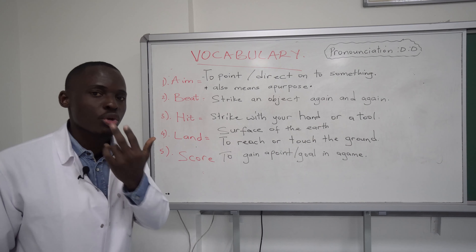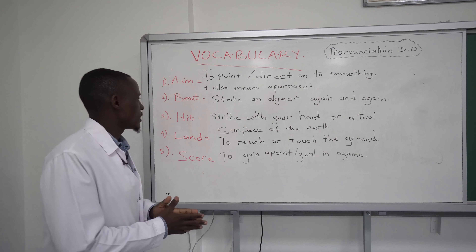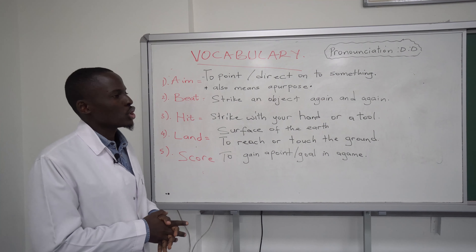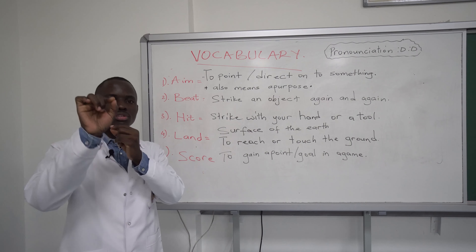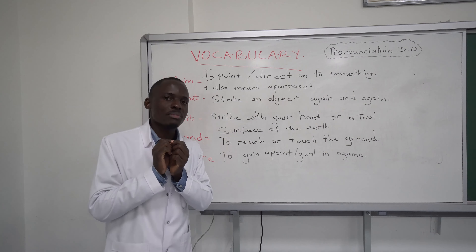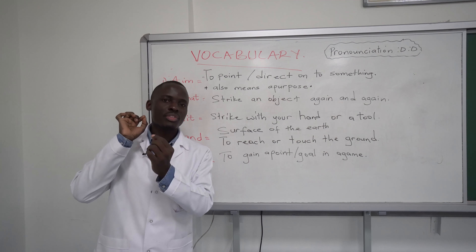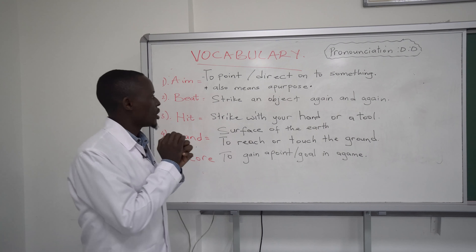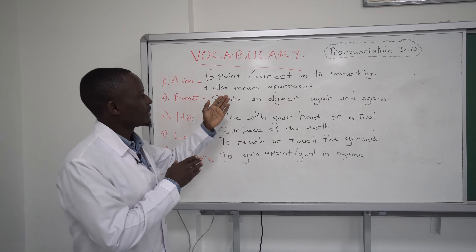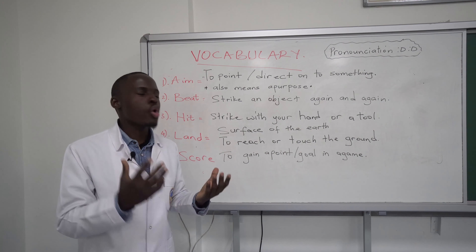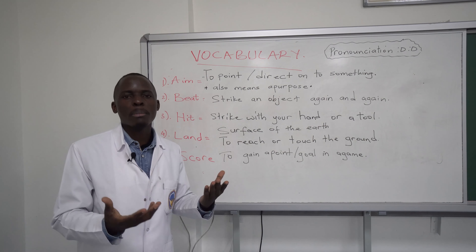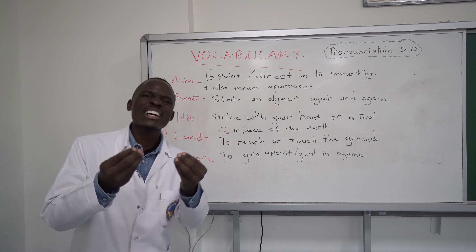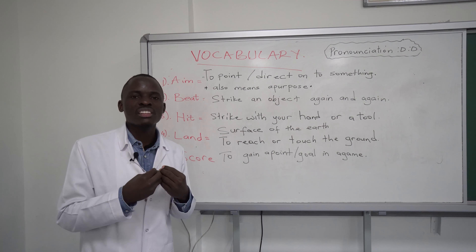Don't forget to check your pronunciation — it's very important. To aim is to point onto something. For example, if I try to shoot something towards you, it means I'm aiming at you. It can also mean a purpose — your goal, your target, your purpose in life.